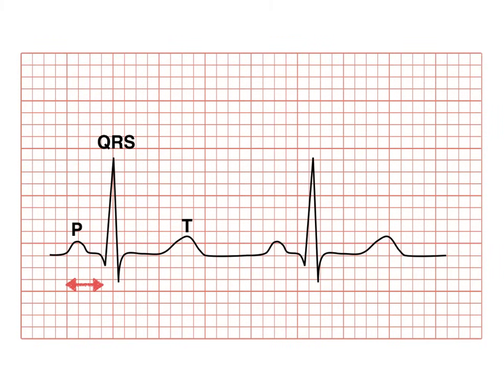Before we go into the AV blocks, here is normal. You have a P wave, a QRS complex, and a T wave. What we're going to be concerning ourselves with today is really the PR interval — that is the distance from the beginning of the P wave to the beginning of the QRS. Normally, on a normal EKG in normal sinus rhythm, the PR interval is less than 200 milliseconds, which is five little boxes on an EKG. In this example of normal, it looks like we've got about three and a half to four blocks, so this is normal. If it was greater than five blocks or greater than 200 milliseconds, then it would be prolonged and we would have to think about an AV block.